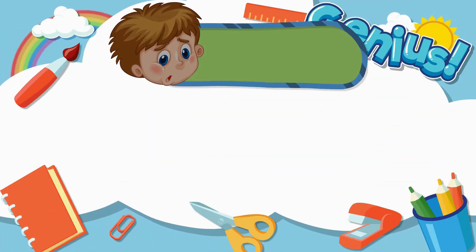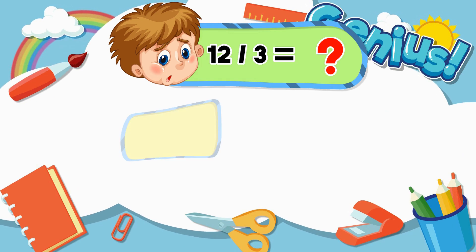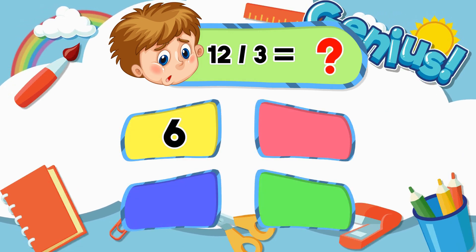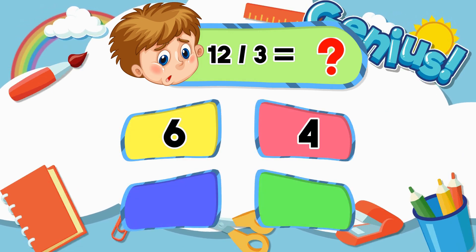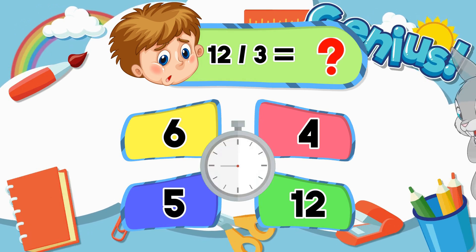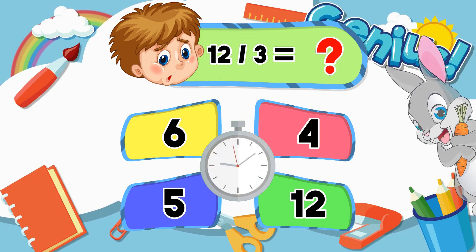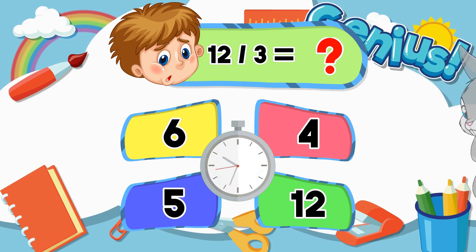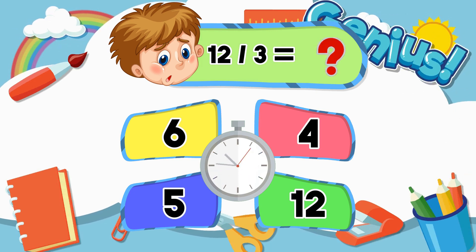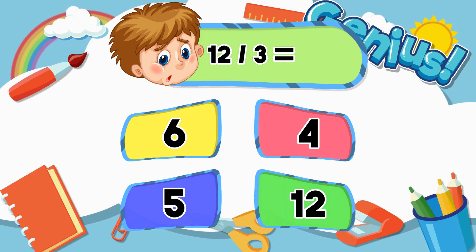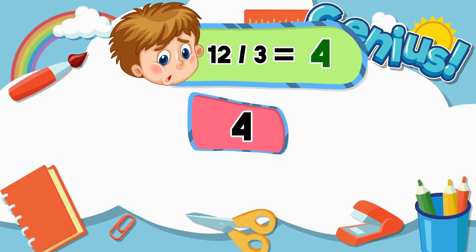What is 12 divided by 3? 6, 4, 5, 12. 4.